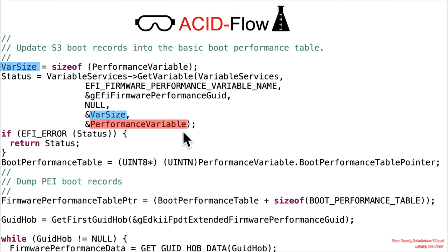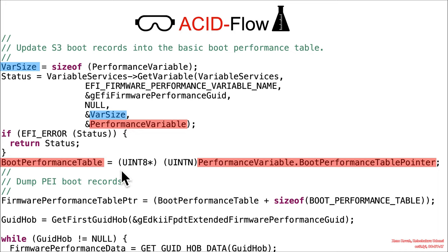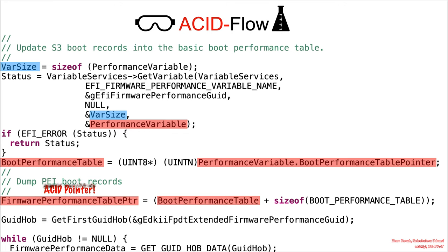But this performance variable does come in as attacker-controlled data, and it's going to contain within it a pointer to the base of some table. That's going to be the boot performance table — the base of some table. And then at the base plus the size of the performance table data structure, it's going to find a thing called the firmware performance table pointer. What's interesting is that this is going to be an actual straight-up ACPI pointer — one of the more egregious examples of code taking something from attacker-controlled content and using it literally as a pointer directly.